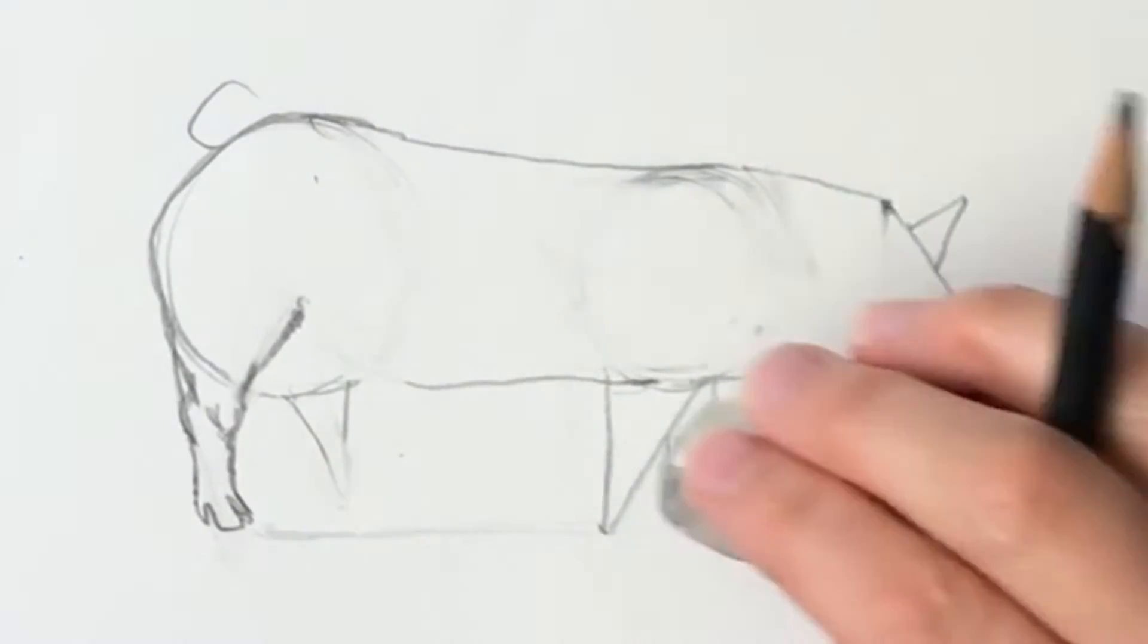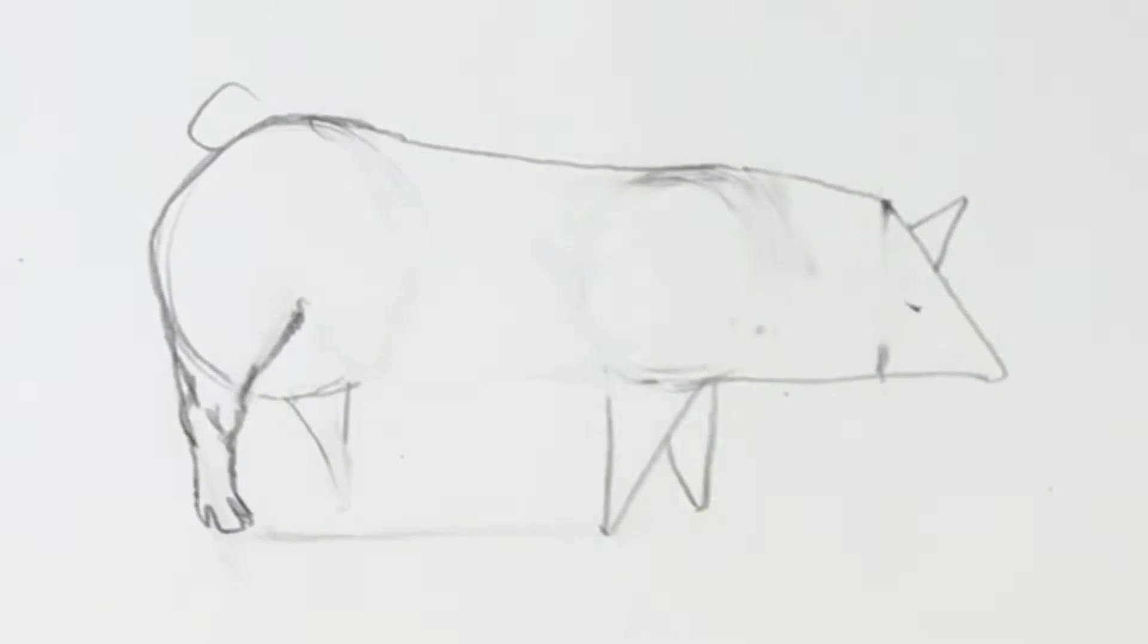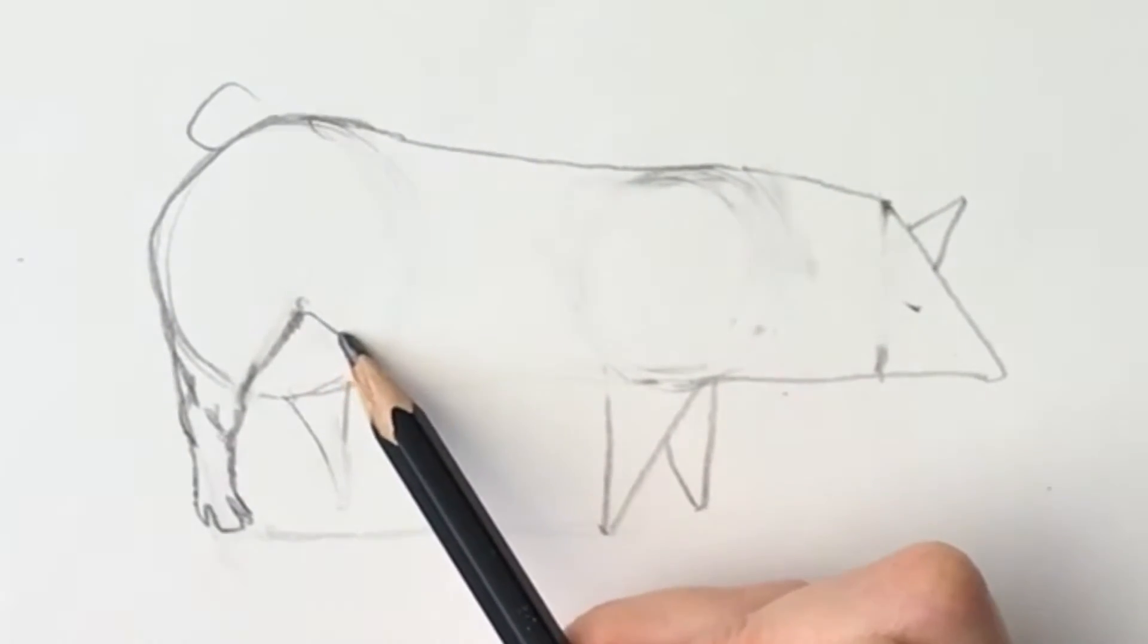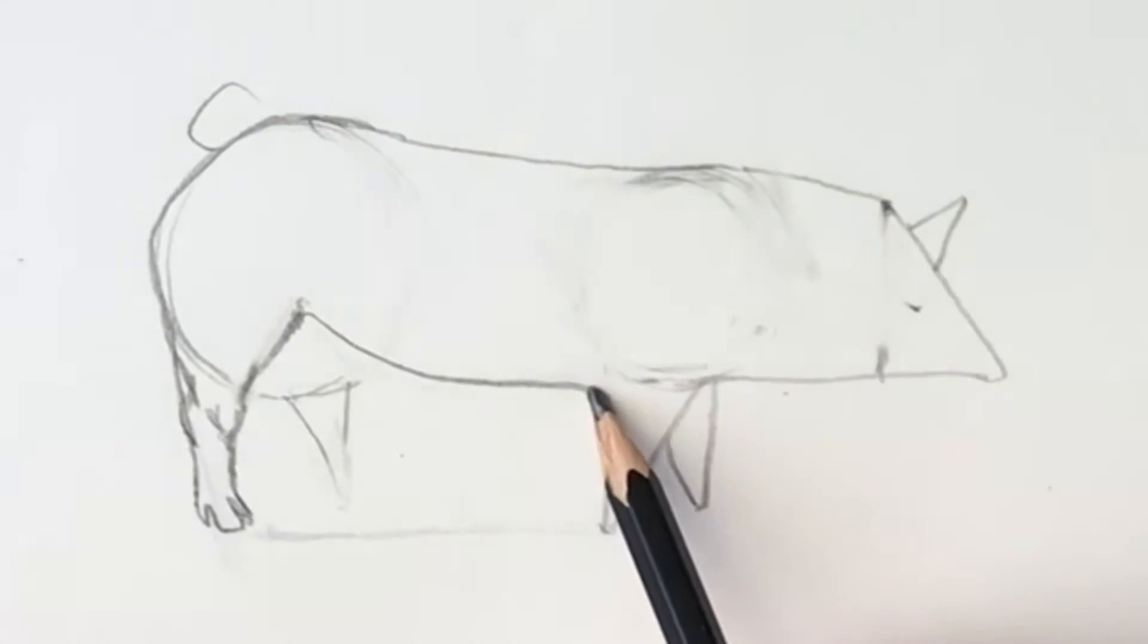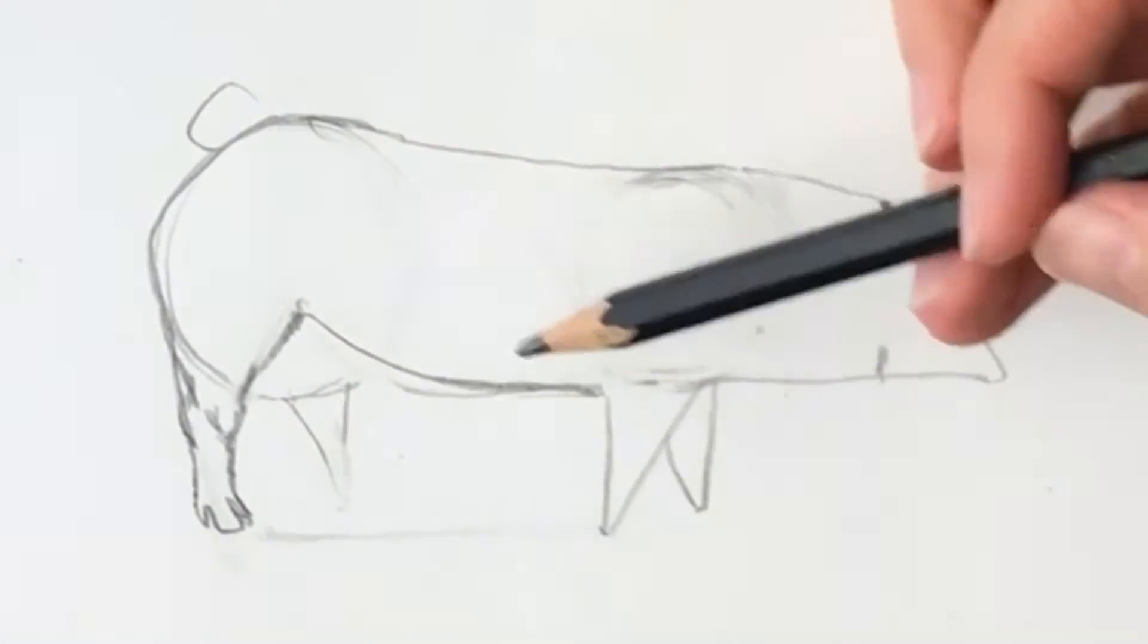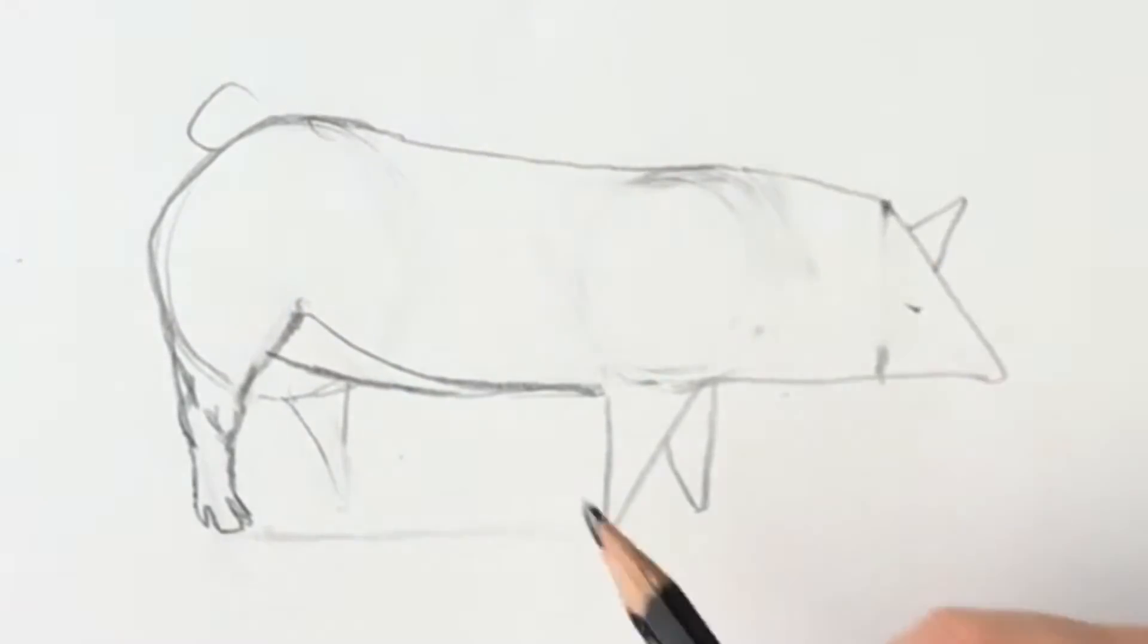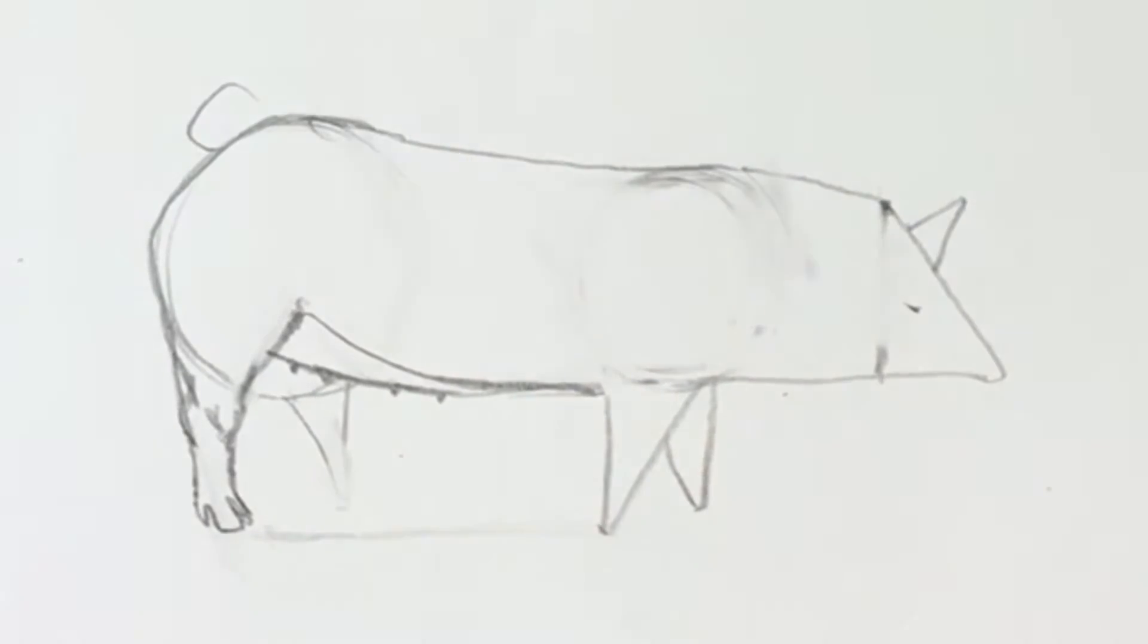Now we're just going to erase this line. And we're going to draw it in again a bit more accurately. So the underside of the belly. This is a female pig. So just bring the underside of the belly. And it's got a few little teats underneath there. Just like so.